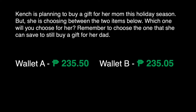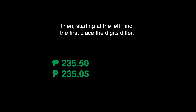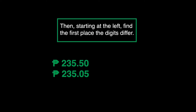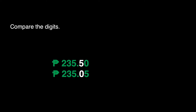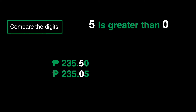How will we solve this problem? First, line up the decimal points. Then, starting at the left, find the first place the digits differ. Then, compare the digits. We can say that 5 is greater than 0, or in symbols, 5 is greater than 0.